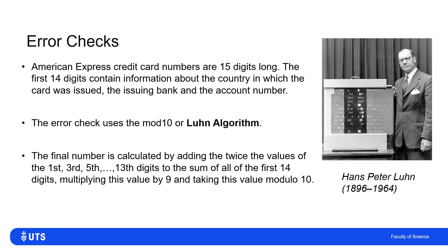The Luhn algorithm is calculated by adding twice the first, third, fifth, seventh, up to the 13th digits to the sum of all the first 14 digits, multiplying that by 9, and then taking the remainder mod 10.